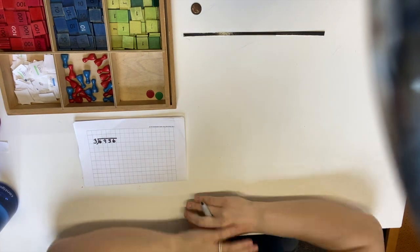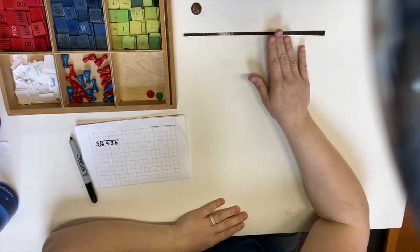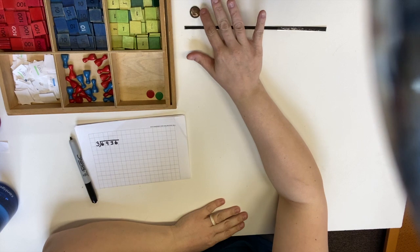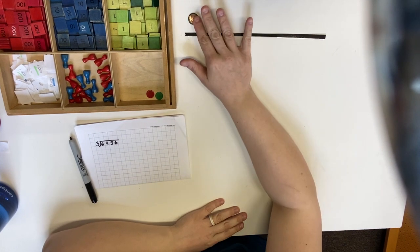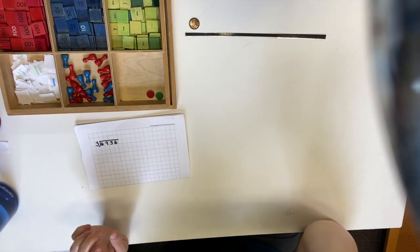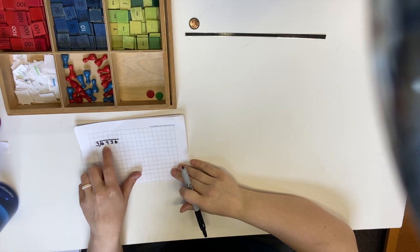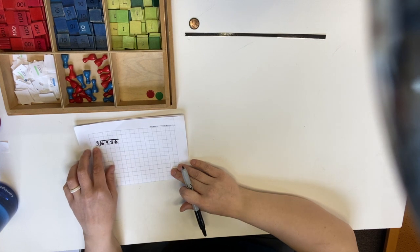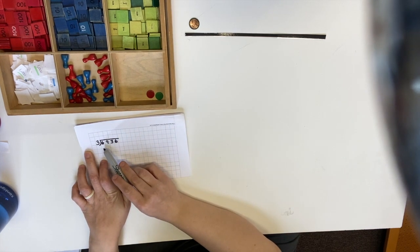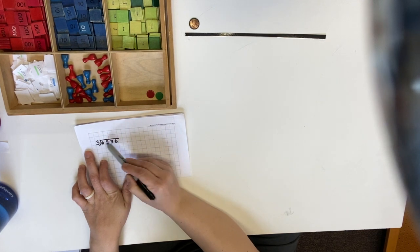Welcome to another stamp game lesson. This lesson is going to be all about group division. This part here is called our dividend — this is what we're dividing into. This number on the outside of the bracket is called the divisor. Our problem says six thousand nine hundred thirty-six divided by three equals, and this line up here is our equals line — that's where we're going to write the answer.